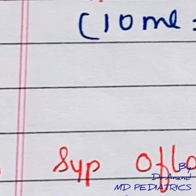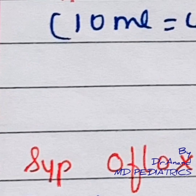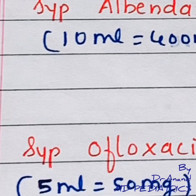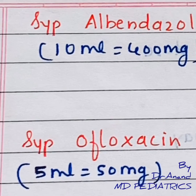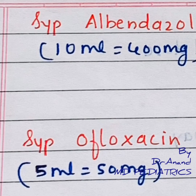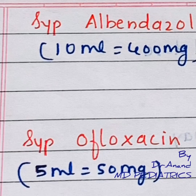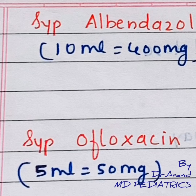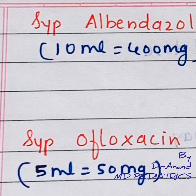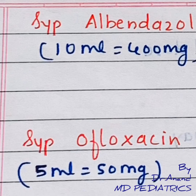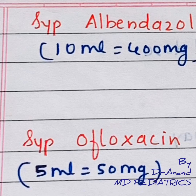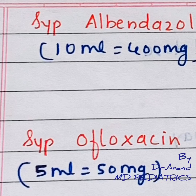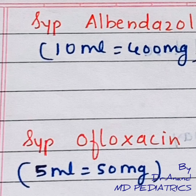Coming to the second drug — ofloxacin. We all know that ofloxacin acts against gram-positive anaerobes and chlamydia. It is also used for corneal ulcers, conjunctivitis, otitis externa, and CSOM.